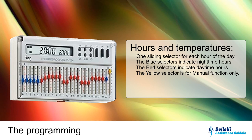Now let's move on to thermostat programming. To start, ensure that the clock displays the correct time. If you wish to adjust the time, press the clock button — you will see the minutes flashing. Use the button to adjust the minutes, and once done, press the clock button again to move to the hours. Once you've also set the hours, press the clock button to save the changes.